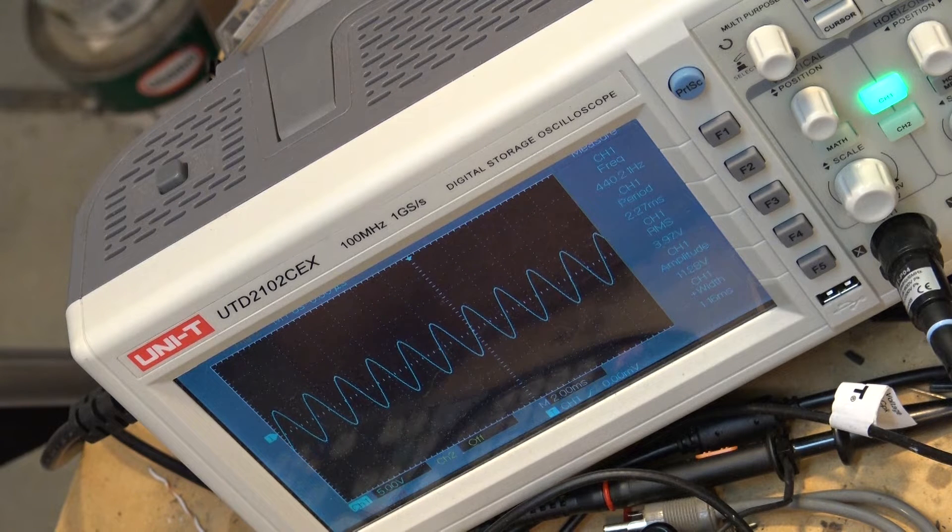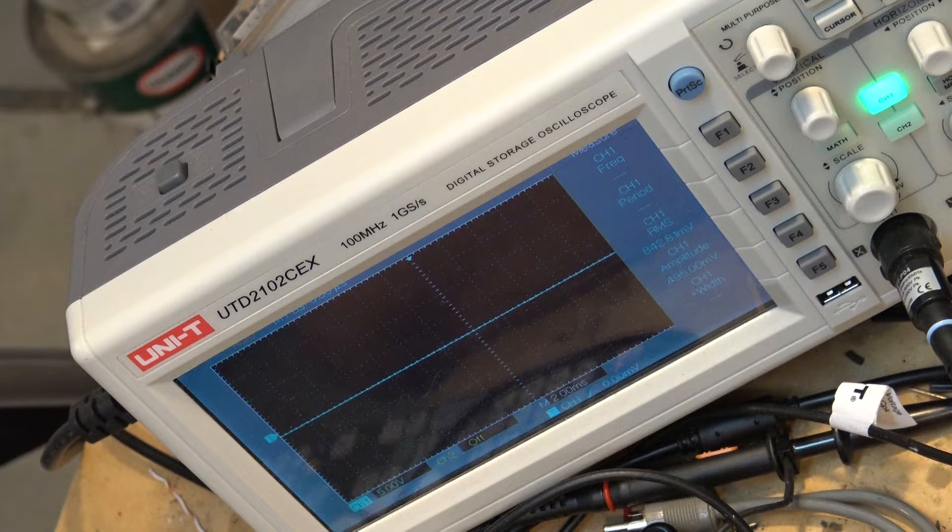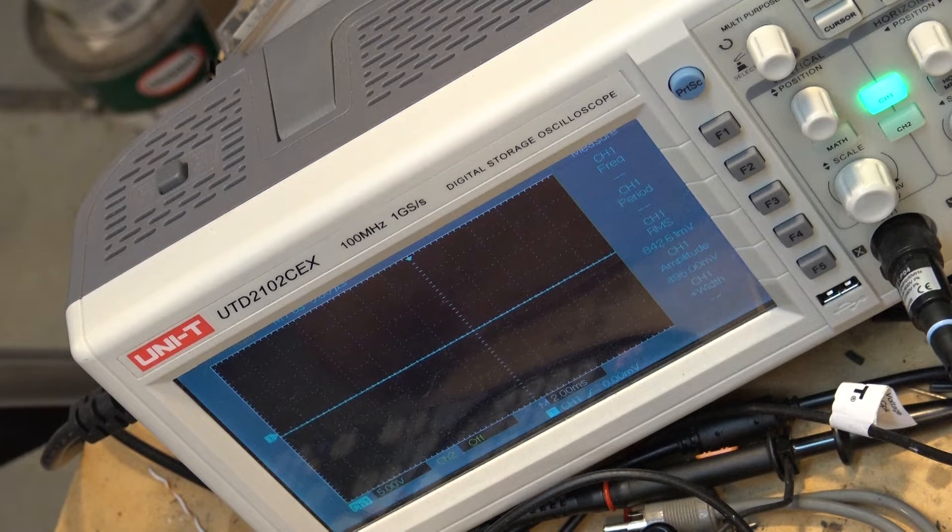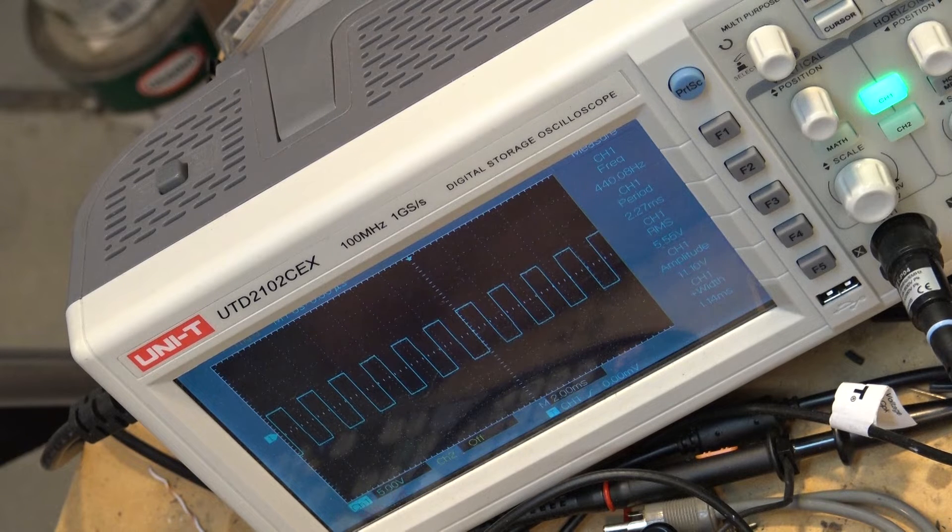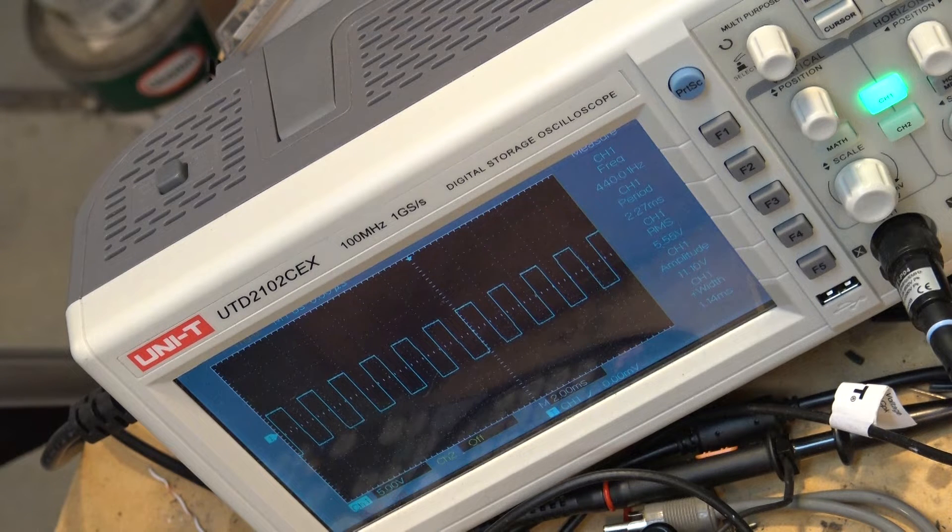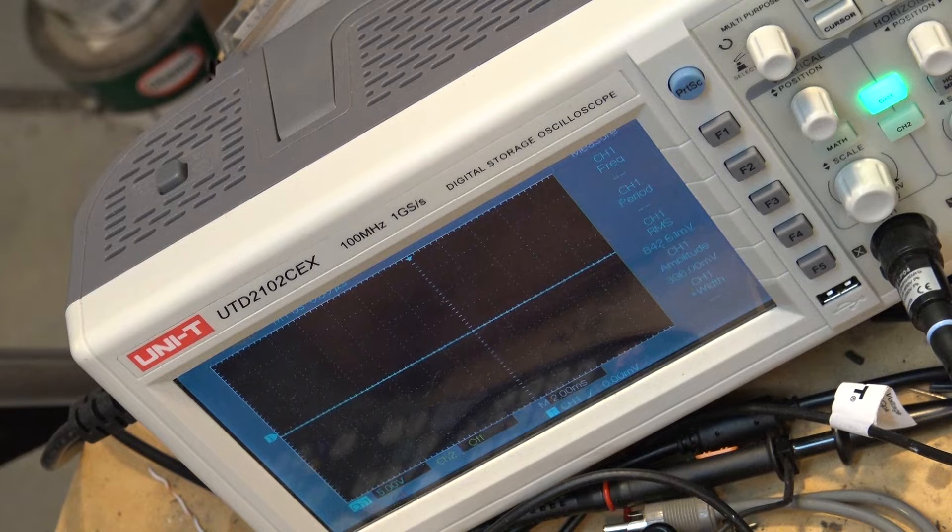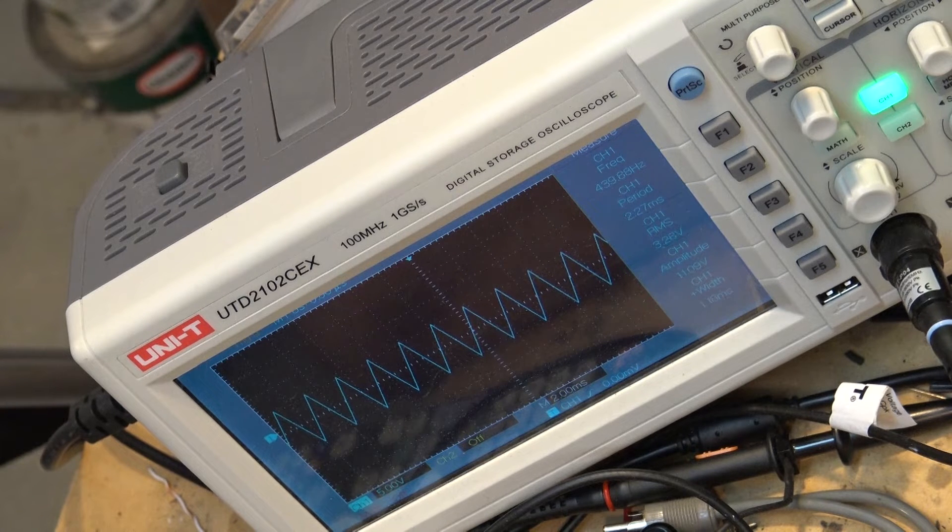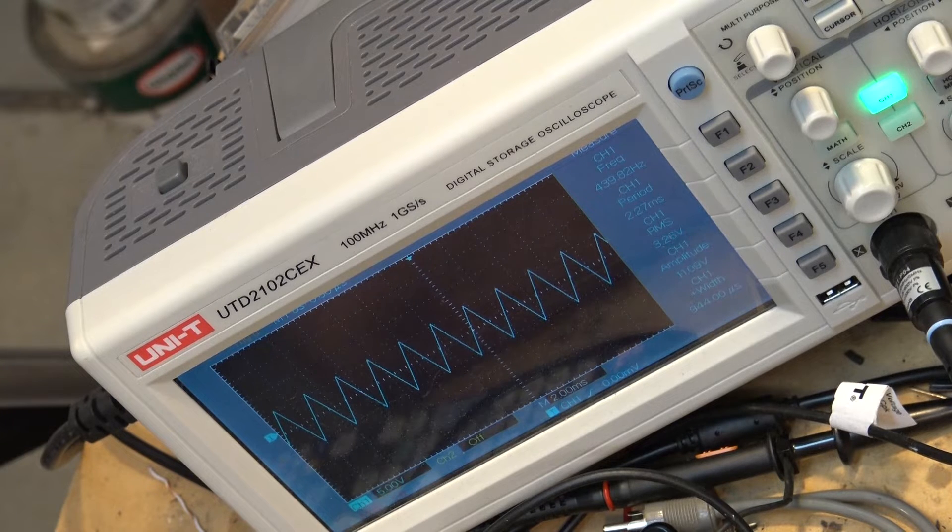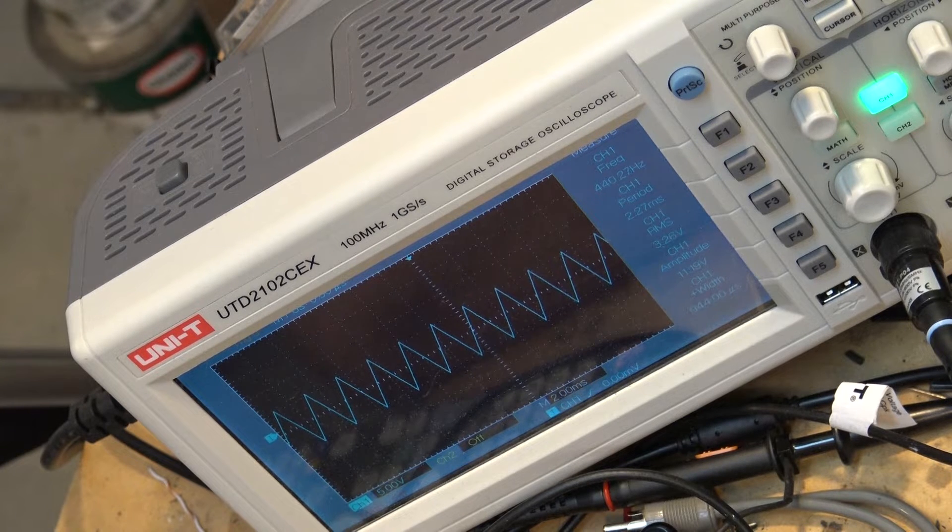So we'll change our mode to a square wave. Here's our square wave. Nice and clean. Make it a triangle wave. There's our triangle wave. Looking good. I can find no fault with that.